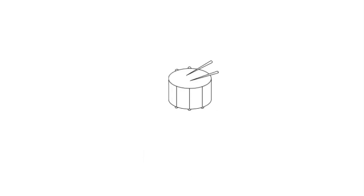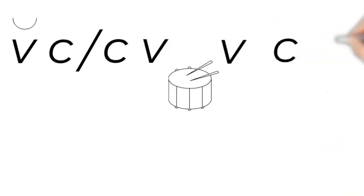Now it always helps to break words up into syllables. So we can look for vowel, consonant, consonant, vowel. That's one of the patterns you can look for. Or you could look for vowel, consonant, vowel.